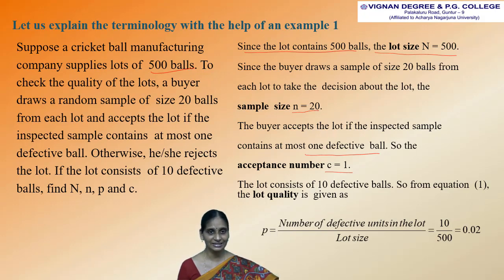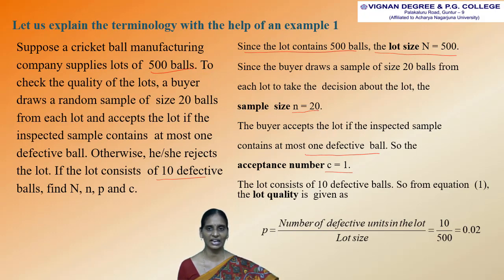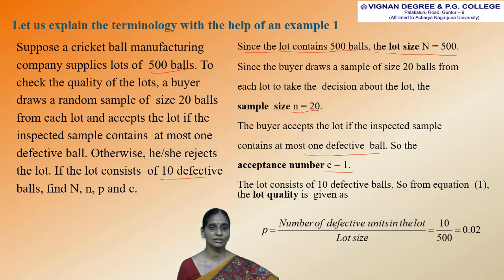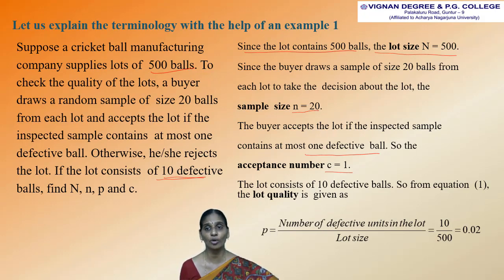The question is: if the lot consists of 10 defective balls, we have to find out the lot quality. From equation 1, the lot quality p equals the number of defective units in the lot divided by lot size. Here the lot consists of 10 defective balls divided by the lot size of 500, so 10 divided by 500 gives p equal to 0.02. This is the lot quality.